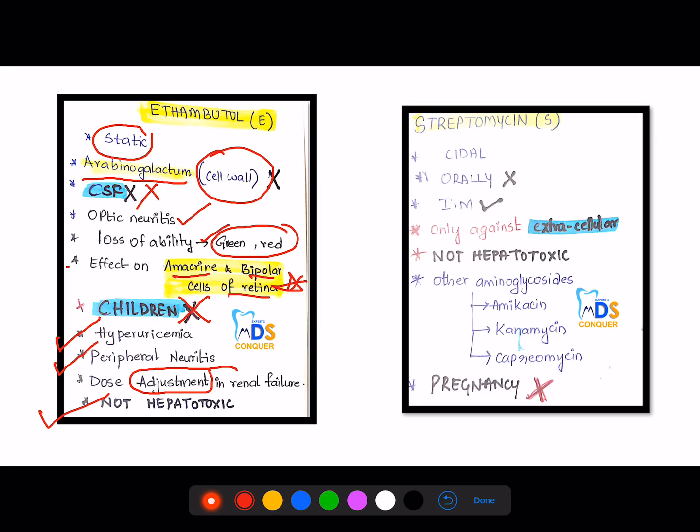Then coming to streptomycin. It is a cidal drug, and orally it cannot be given. Only intramuscularly we can use streptomycin. And it is only active against extracellular and not hepatotoxic. And there are other aminoglycosides used in anti-TB: amikacin, kanamycin, and capreomycin. And this streptomycin is contraindicated in pregnancy.